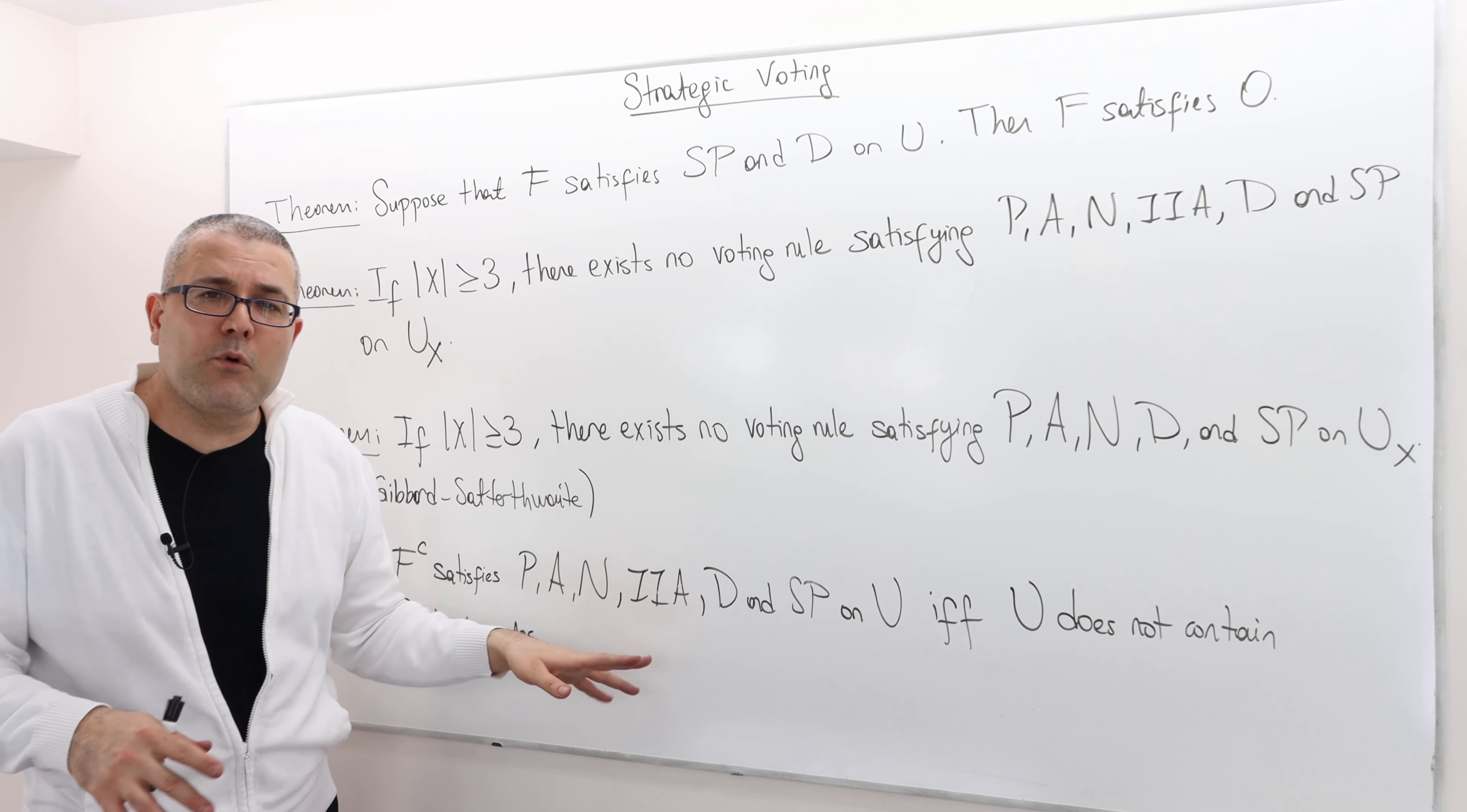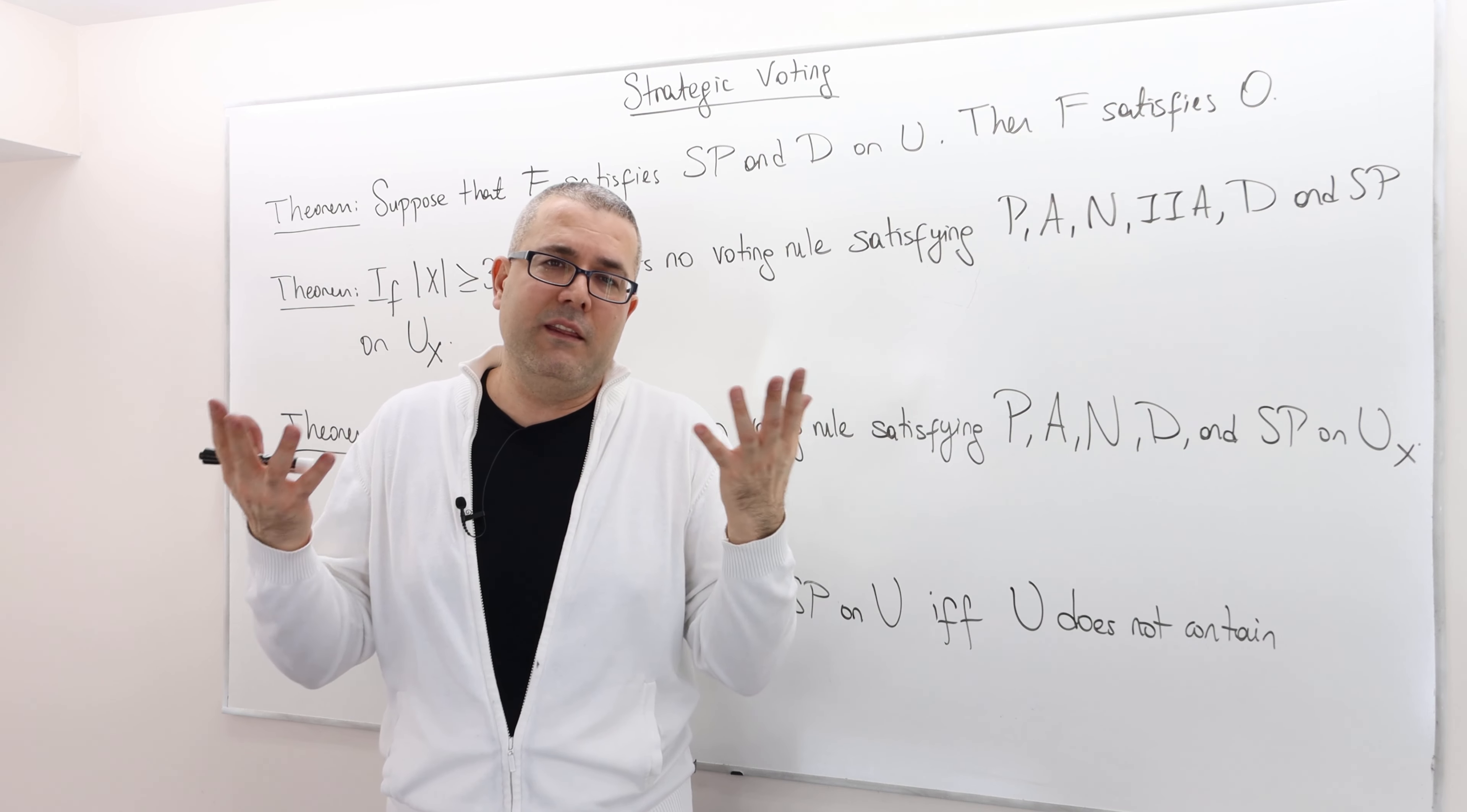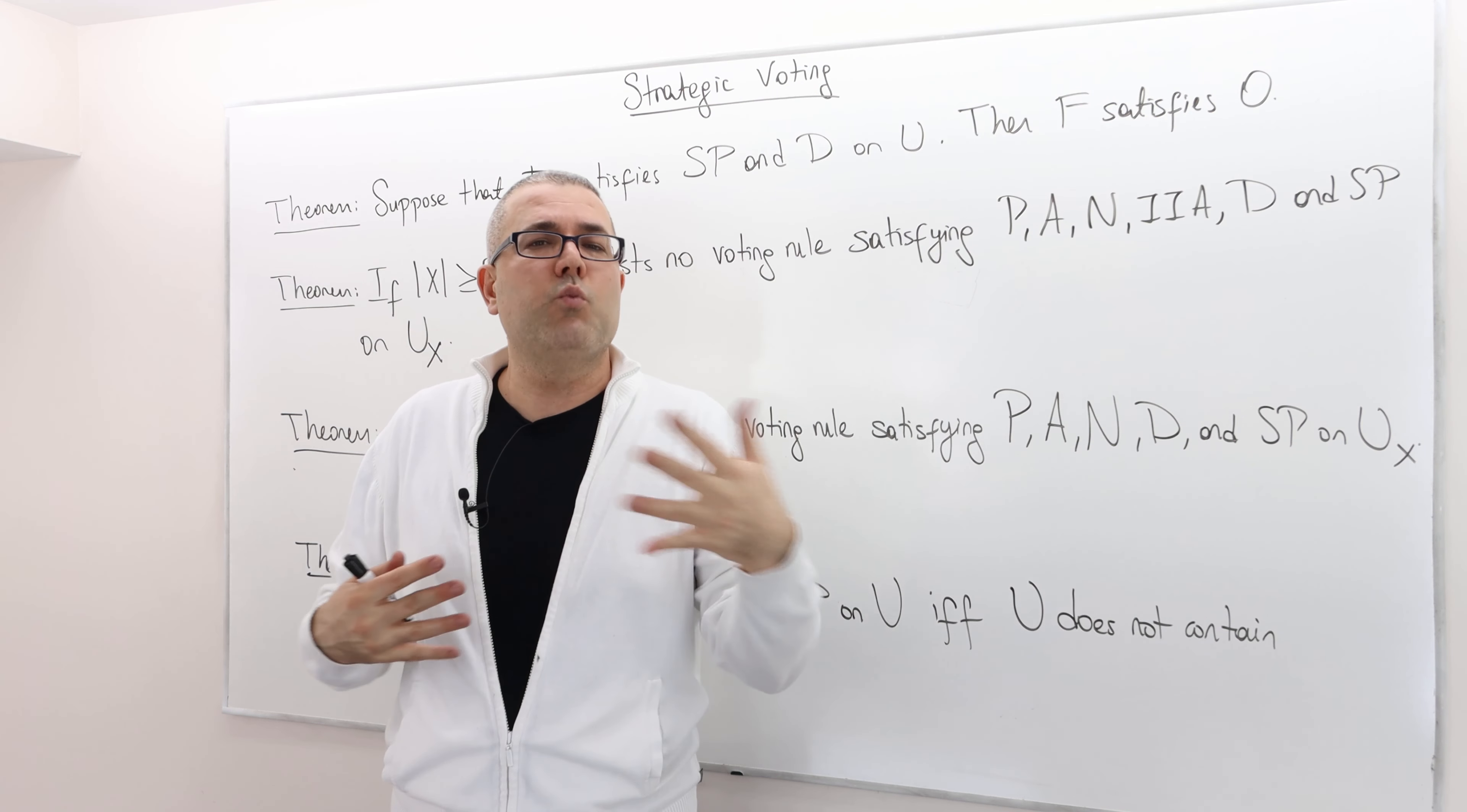Or we can get rid of some of those assumptions, weaken them maybe, strengthen them, some of the others. And so we can play with axioms and or preference domains and sometimes get possibility results, sometimes get impossibility results. I mean, again, there's a huge literature about voting and choice theory and this is just a brief introduction maybe.